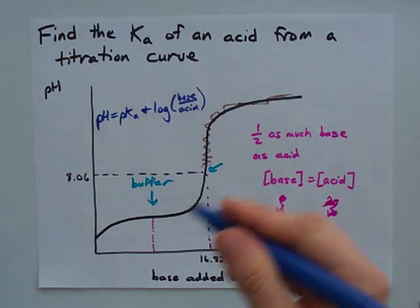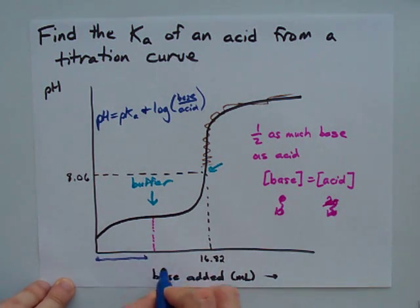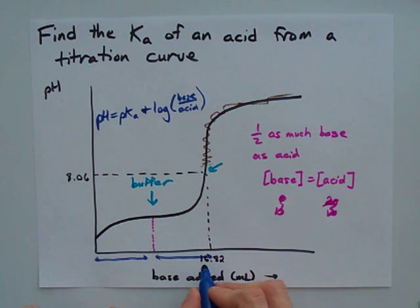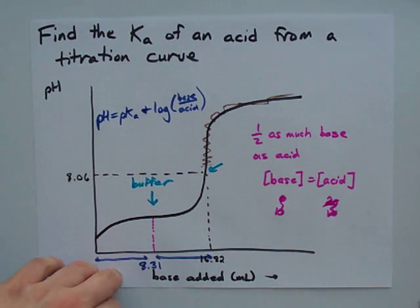And the greatest part about this point in the buffer region, exactly halfway to equivalence point, in this case half of 16.82 is 8.31 milliliters.